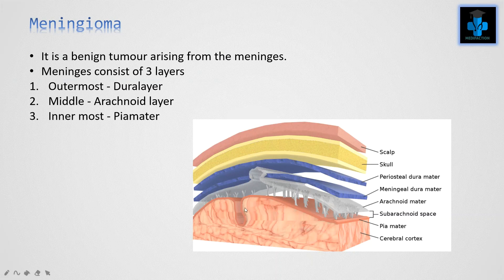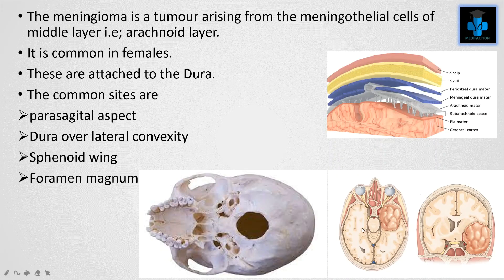Meningioma is a benign tumor arising from the meninges. The meninges consist of three layers: the outermost dura mater, the middle arachnoid layer, and the innermost pia mater. The pia mater is associated with the cerebral cortex. Meningioma is a tumor arising from the meningothelial cells of the middle layer, that is the arachnoid layer.